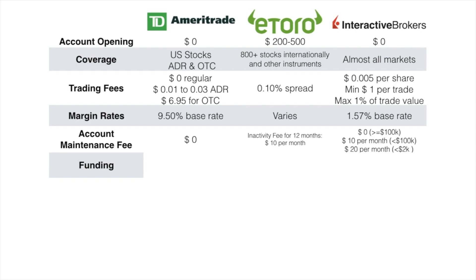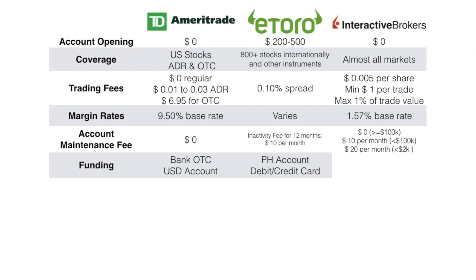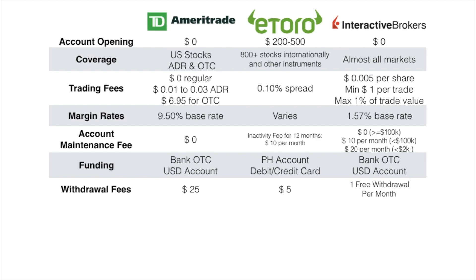For funding, TD Ameritrade requires going to your local bank for an over-the-counter transaction or transferring from a US dollar account. For eToro, you can fund via local bank or debit and credit card, but eToro has given notice they will remove the local online banking feature. Interactive Brokers is similar to TD Ameritrade — local bank OTC transfer or US dollar account. For withdrawal fees, TD Ameritrade charges $25; eToro charges $5 with a minimum withdrawal of $30; Interactive Brokers gives one free withdrawal per month with charges for additional withdrawals.